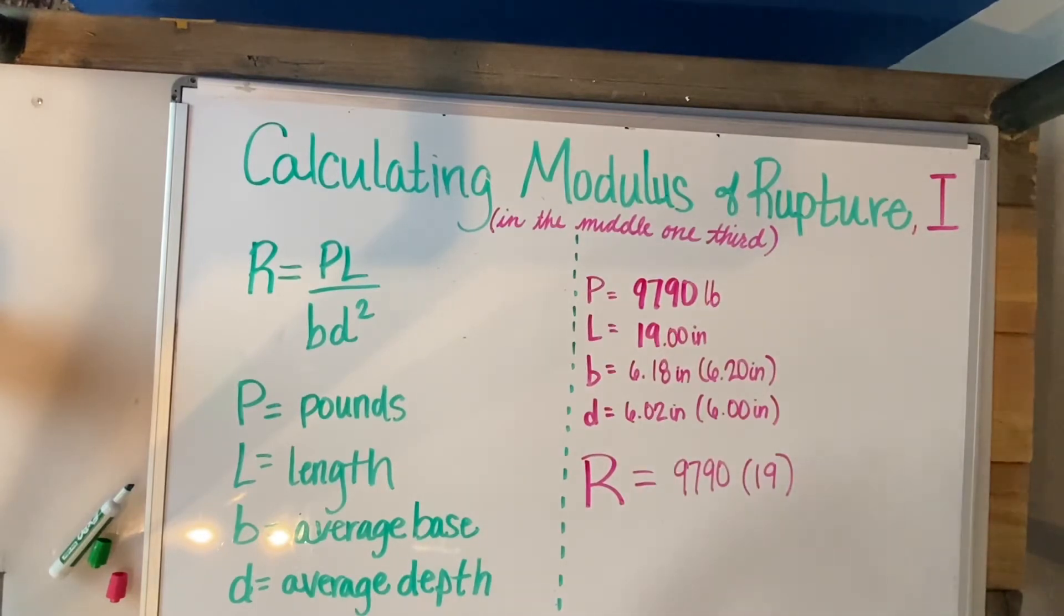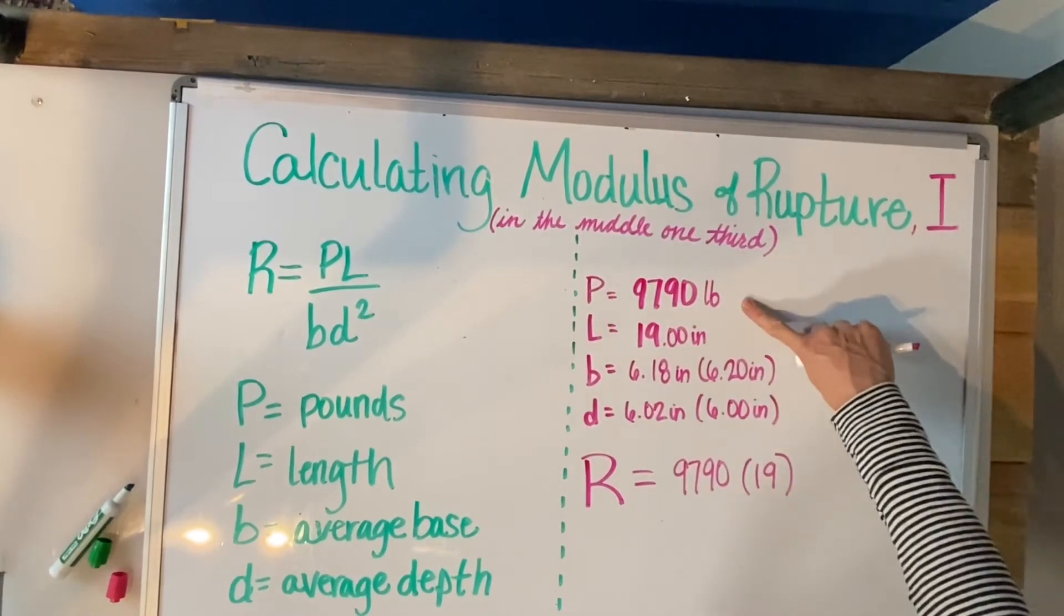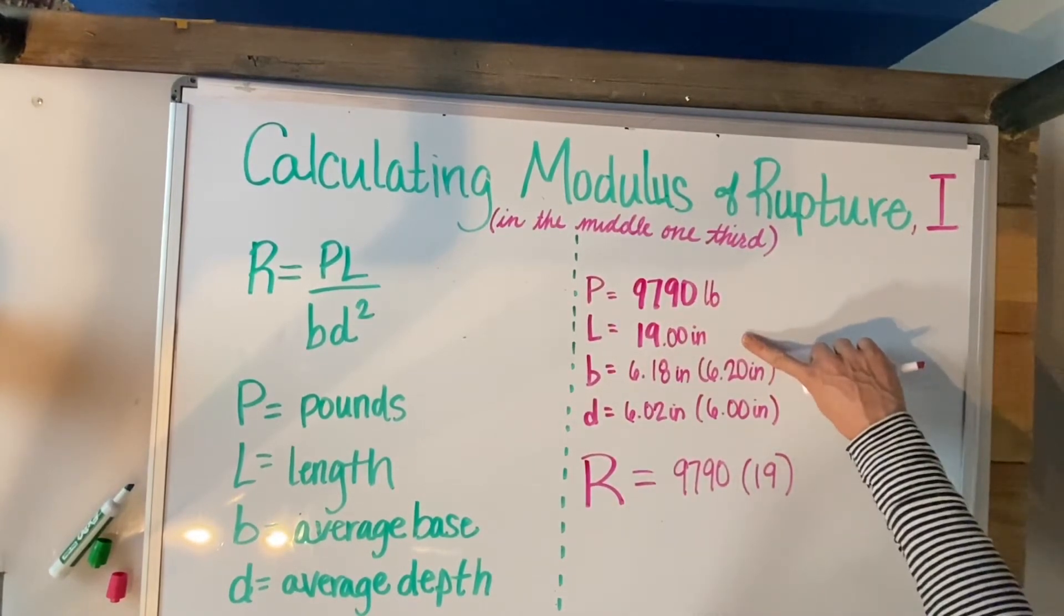I went ahead and did that flex break and here are the numbers that I got. My P is 9790, L is 19 inches.